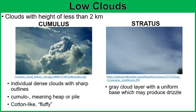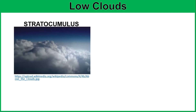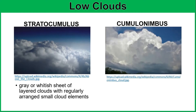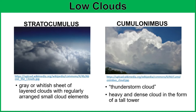Next is the stratus cloud, described as a gray cloud layer with a uniform base, which may produce drizzle if thick enough. They are produced by a column of rising air in the lower altitudes, called thermals. The name comes from the Latin prefix strato, meaning layers. Next we have stratocumulus, a combination of the first two — described as a gray or whitish sheet of layered clouds with regularly arranged small cloud elements. Next is the cumulonimbus, also called the thunderstorm cloud. This is a heavy and dense cloud in the form of a tall tower, with a dark base that produces precipitation such as hail or tornado.